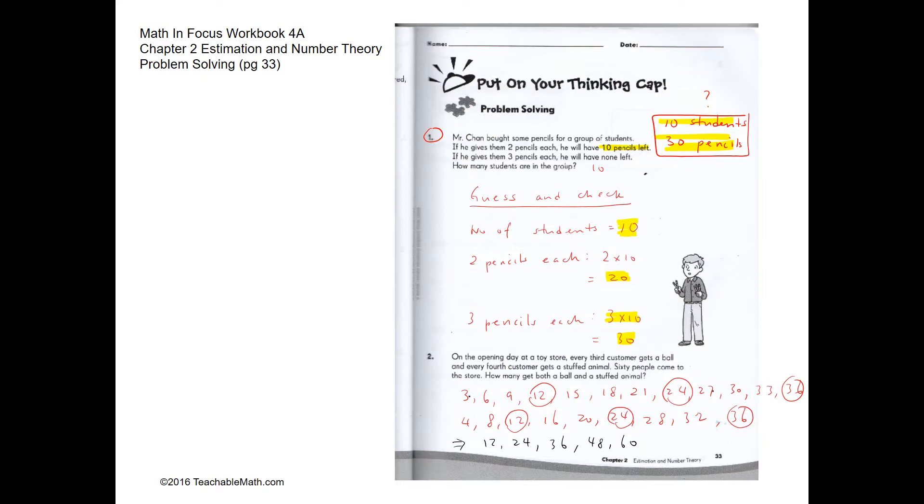Question 2. On the opening day at a toy store, every 3rd customer gets a ball and every 4th customer gets a stuffed animal. 60 people came to the store. How many get both a ball and a stuffed animal?